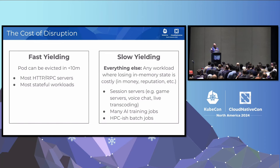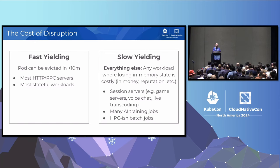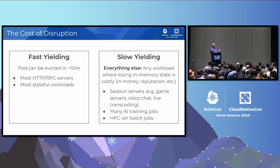Slow-yielding apps are basically everything else — any workload where losing the in-memory state is costly in hard money, like training workloads, or reputation, like game servers. Session servers fit this category too; we use Agones to run voice chat and live video transcoding as well. Many AI training jobs have this attribute of being fairly slow-yielding, and HPC-ish batch jobs as well.